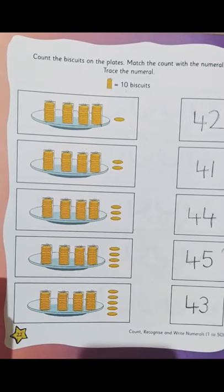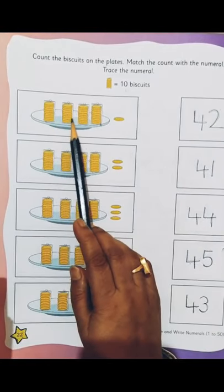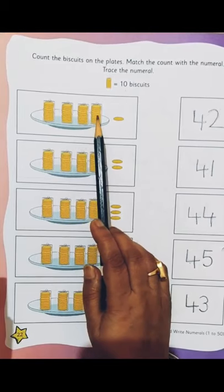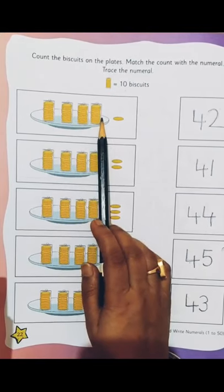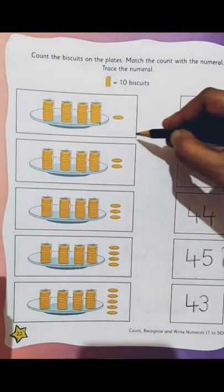So now we will be matching it. So we have 10 biscuits, 20 biscuits, 30 biscuits, 40 biscuits. So they are all together 40 biscuits and 1 biscuit. So how much it becomes? 40 and 1, 41.